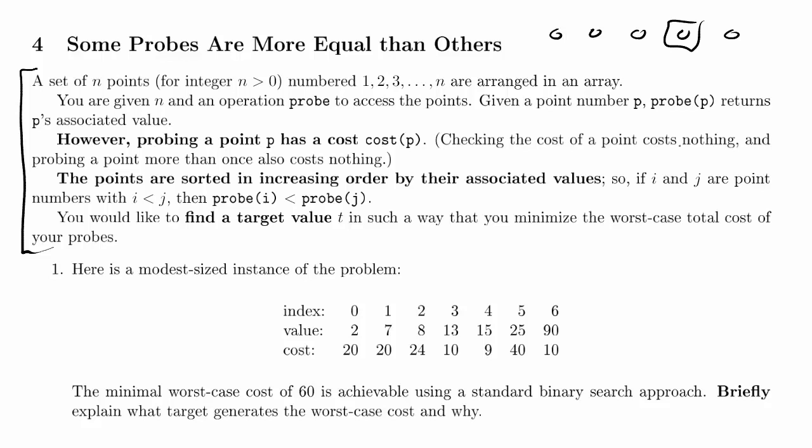The points are sorted in increasing order by their associated values. So the values, V1, V2, V3, V4. And we know that V3, for example, is greater than or equal to, actually greater than, V2 because 3 is greater than 2, and so on and so forth.